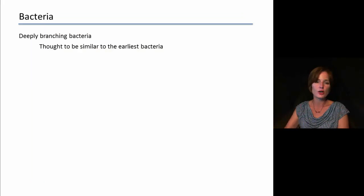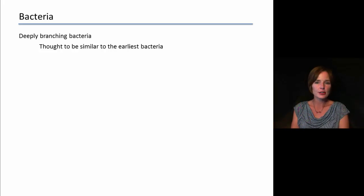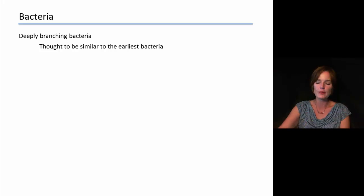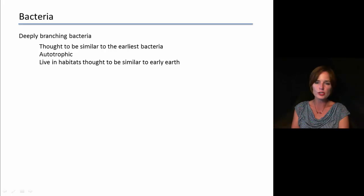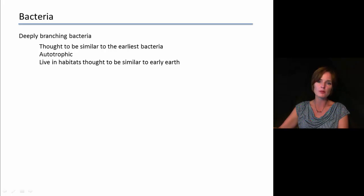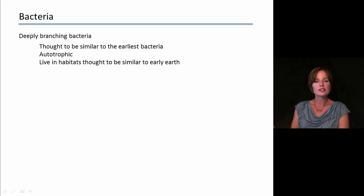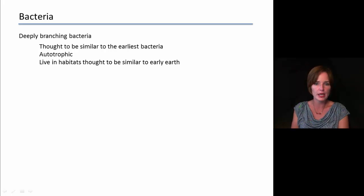The first group we'll discuss are the deeply branching bacteria. They are called deeply branching bacteria because they are thought to be similar to the earliest evolving bacteria. Because of that, these are autotrophic — they are able to make their own carbon sources or organic molecules. That would have been necessary if these were some of the first evolving organisms, because there would not have been other organisms to produce food for them. These also live in habitats thought to be very similar to what the early Earth environment would have been like.